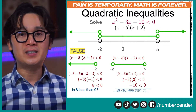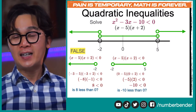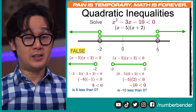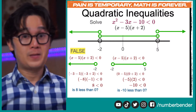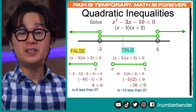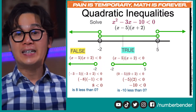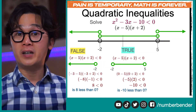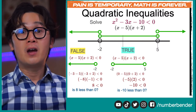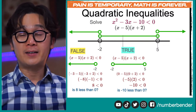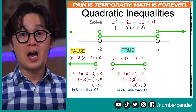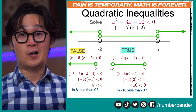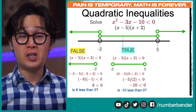The answer is true — negative 10 is less than 0, and any number you plug in between negative 2 and 5 will always be less than 0. So the inequality is satisfied for this partition.